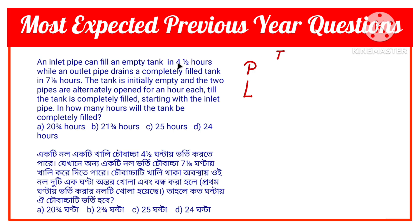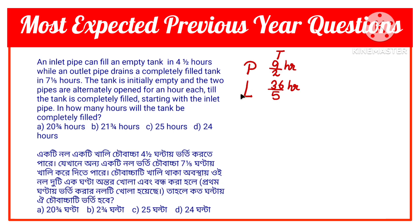The inlet pipe takes 9/2 hours to completely fill the empty tank. The outlet pipe takes seven and one-fifth hours to empty the tank. We convert seven and one-fifth: 7×5 = 35, plus 1 = 36/5. So the outlet pipe takes 36/5 hours to empty the filled tank.